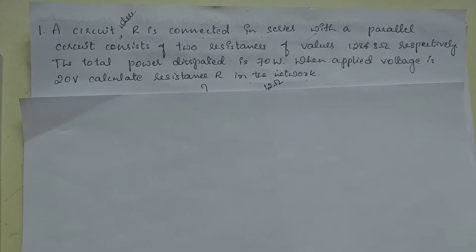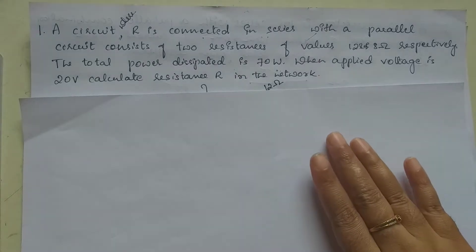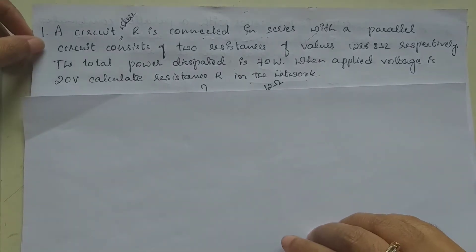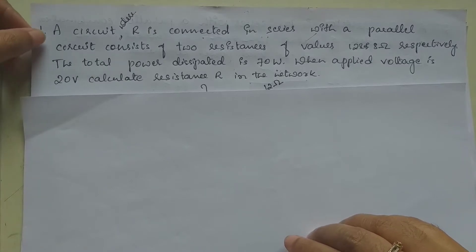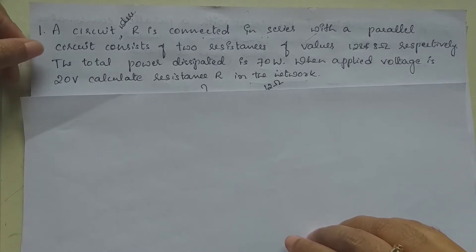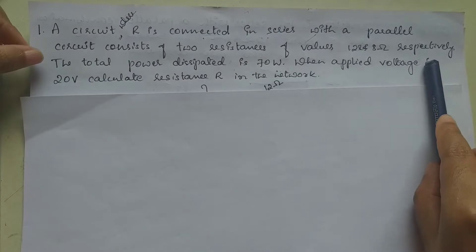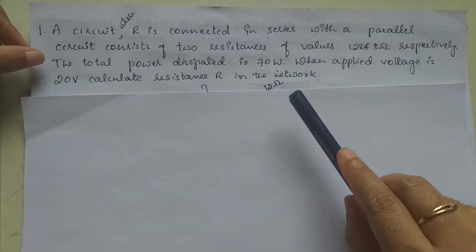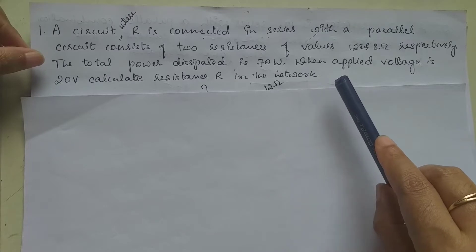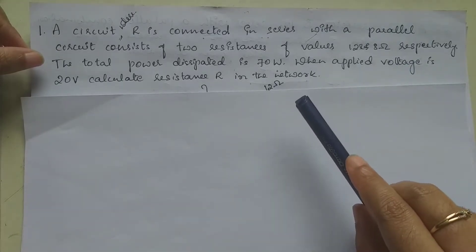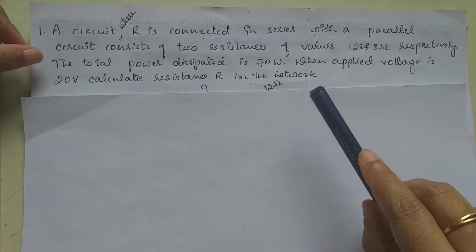Hello students, I am Tara, assistant professor, department of electrical and electronics engineering, Kenra Engineering College, Mangalore. In today's session we are going to solve a problem on module 1, chapter 1. This is a circuit where R is connected in series with a parallel circuit consisting of two resistances of values 12 ohm and 8 ohm respectively. The total power dissipated is 70 watts when the applied voltage is 20 volts. Calculate resistance R in the network.